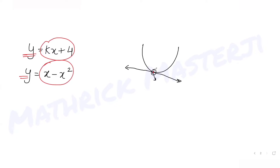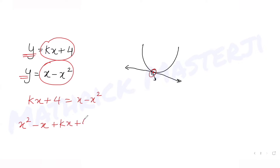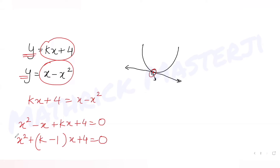Setting kx + 4 equal to x minus x squared and rearranging, we get x squared minus x plus kx plus 4 equals zero, which simplifies to x squared plus (k minus 1)x plus 4 equals zero — a quadratic equation.